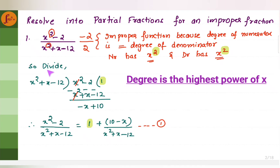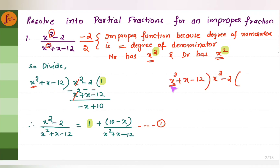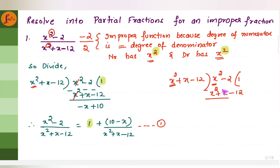What we have to do is divide. We multiply something with x squared to get x squared, so we multiply by 1. x squared into 1 is x squared, plus x into 1 is plus x, minus 12 into 1 is minus 12. Now we subtract the whole thing, so x squared and x squared get cancelled.